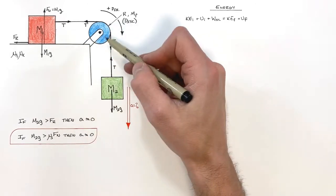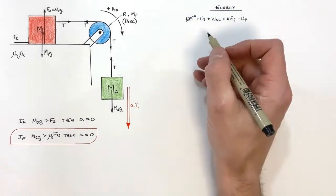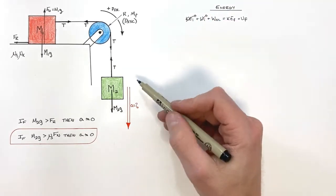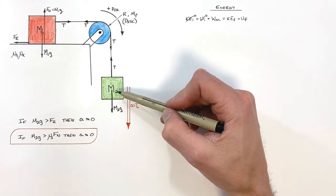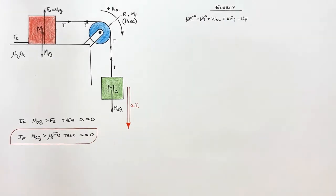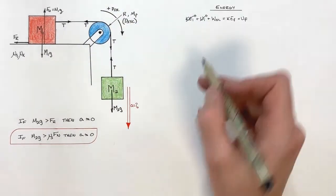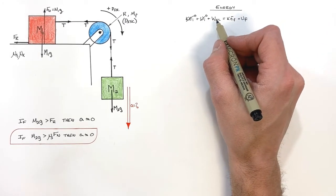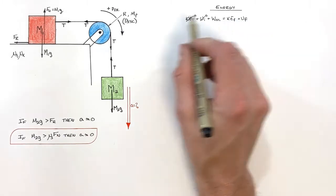The initial kinetic energy of the entire system is zero because it starts at rest. I'm also going to say everything starts at an initial height of zero — what matters is the change in potential energy from initial to final. Our non-conservative work term is going to be interesting: there is in fact non-conservative work done in this problem. A force is going to take energy away from the system, and in this case that force is friction.